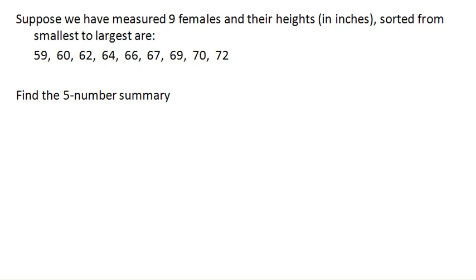So we have a set of female heights and it's been sorted from smallest to largest and we want to find the five number summary.